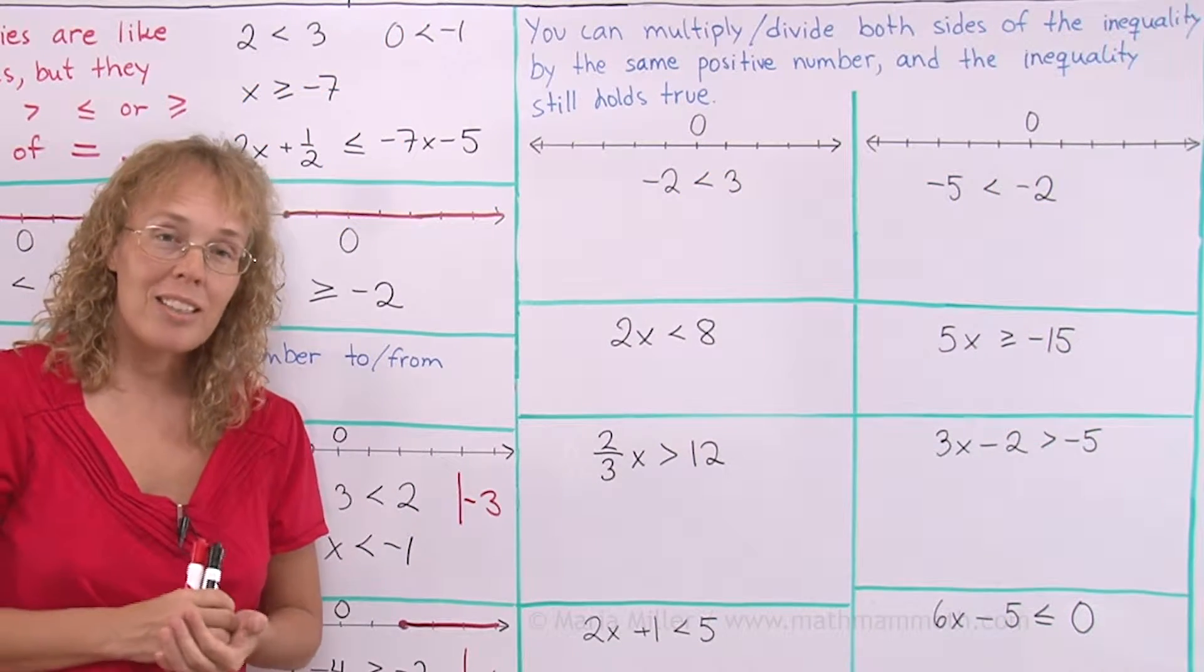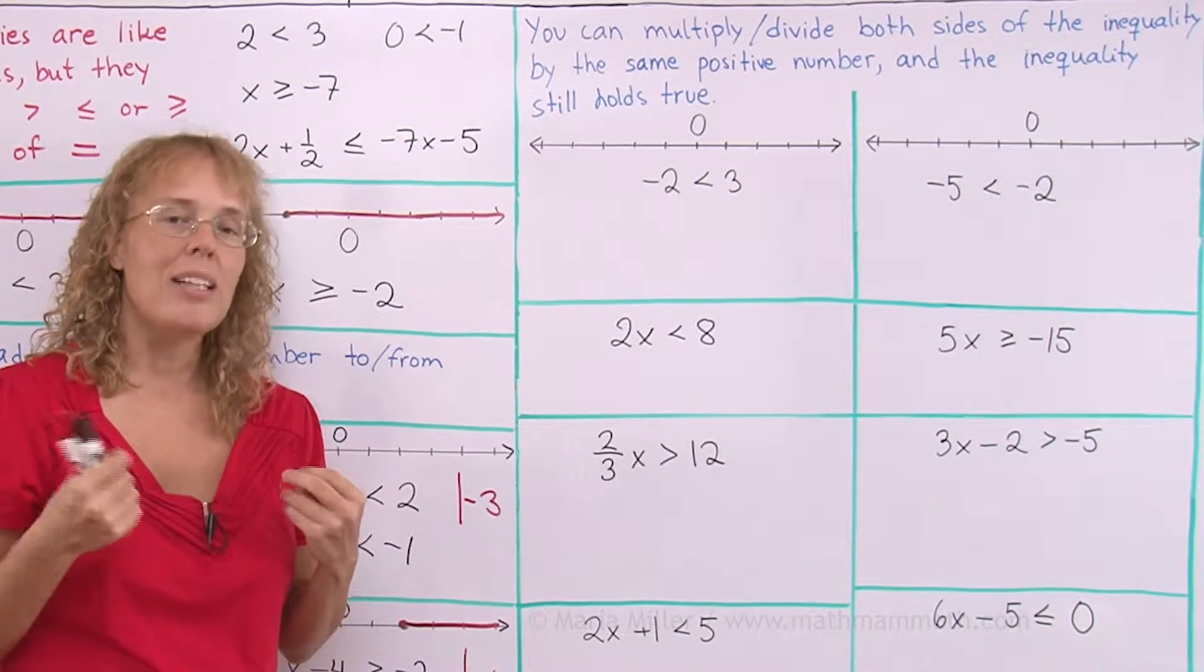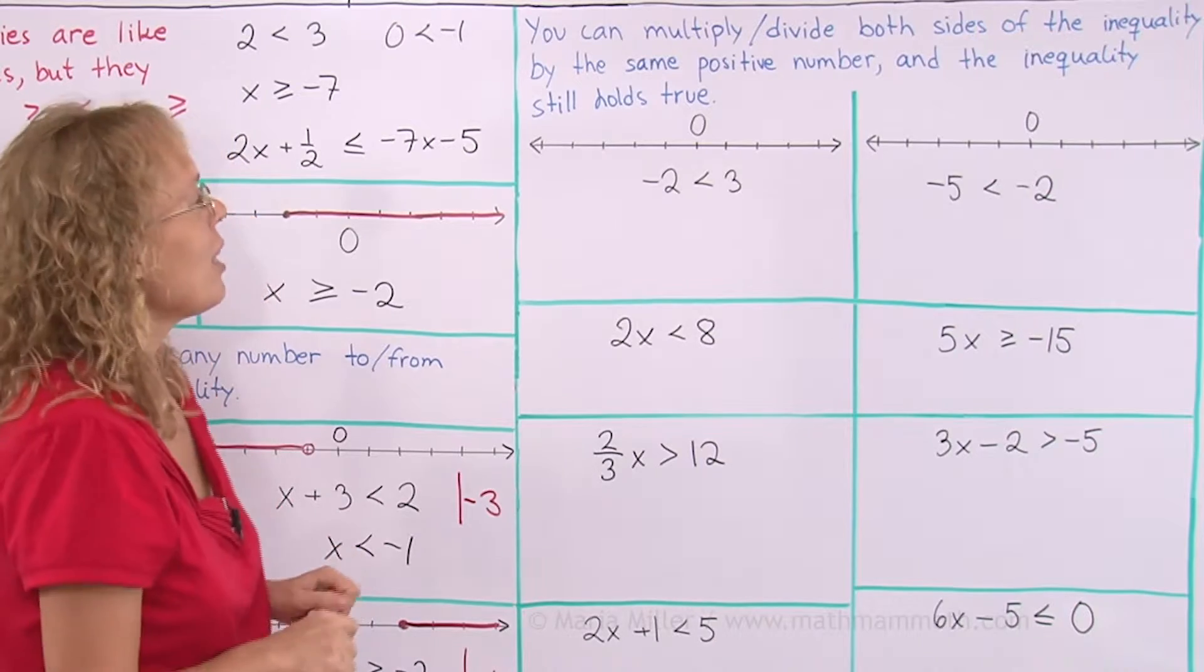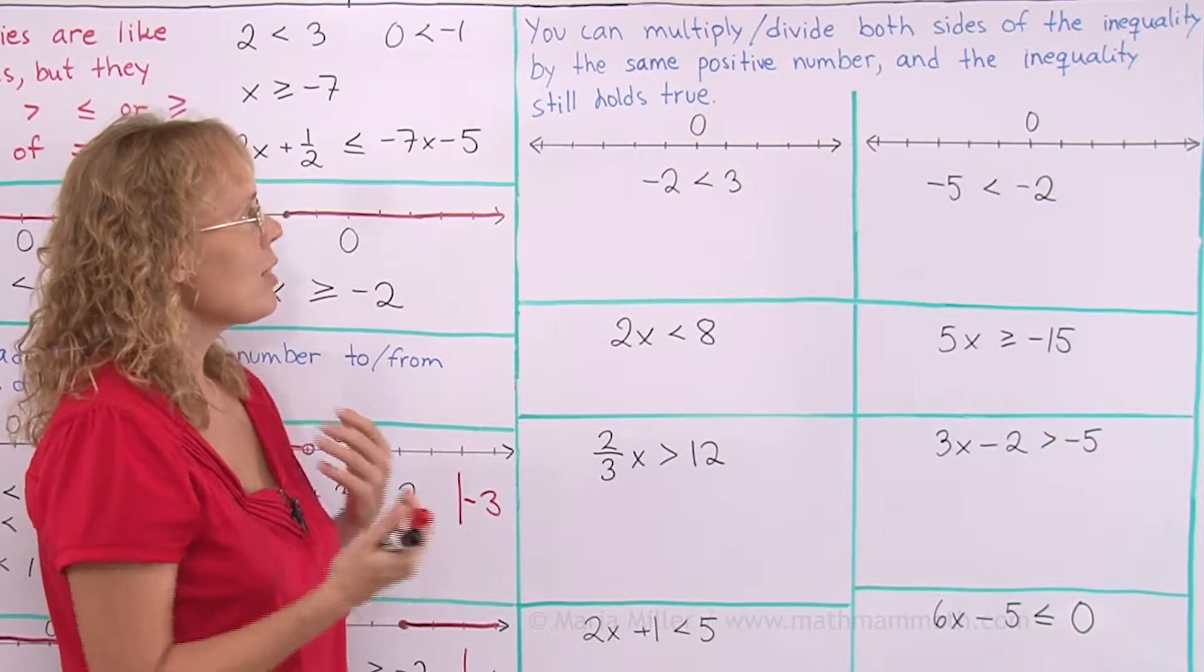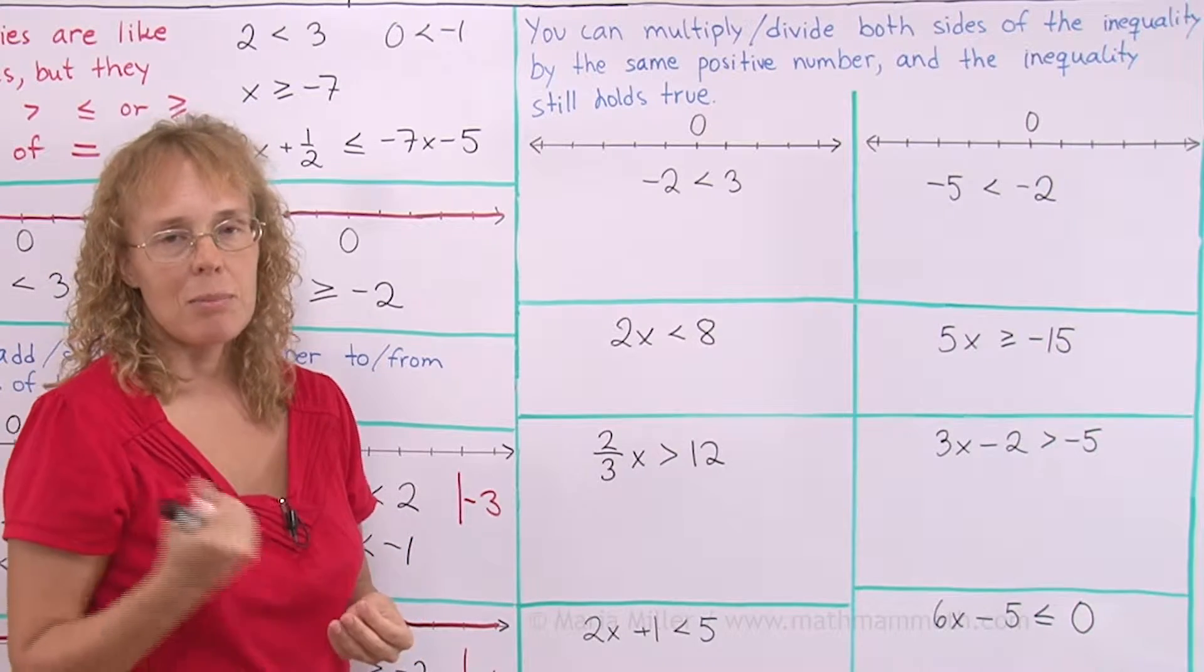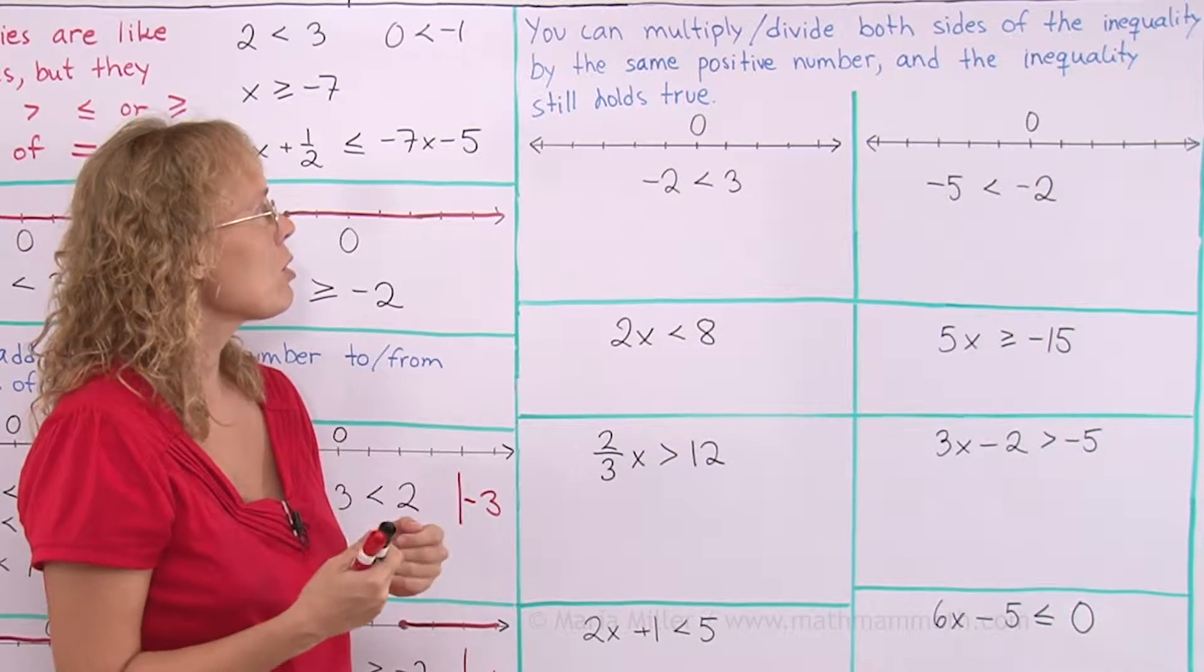Now, when we come to multiplying and dividing the inequality by some number, again we have the same principle. You can multiply or divide both sides of the inequality by some same positive number, and the inequality still holds true.